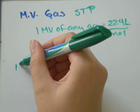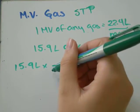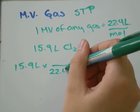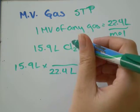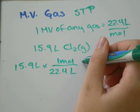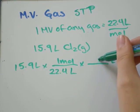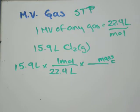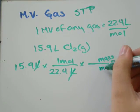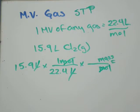So, we have 15.9 liters times 22.4 liters will be enough space to hold one mole. We were asked the mass, so we need to end up with mass on the top. Our liters have canceled out. We need something with moles on the bottom, so that moles will cancel out.